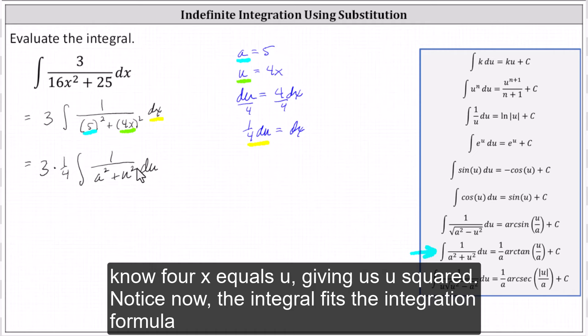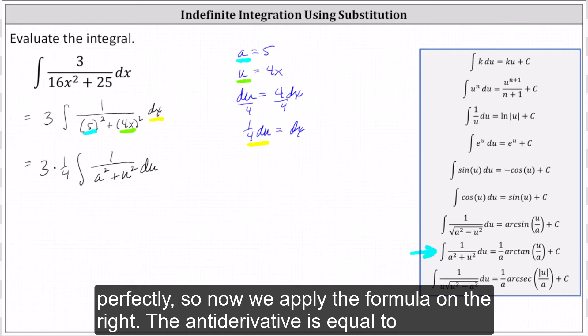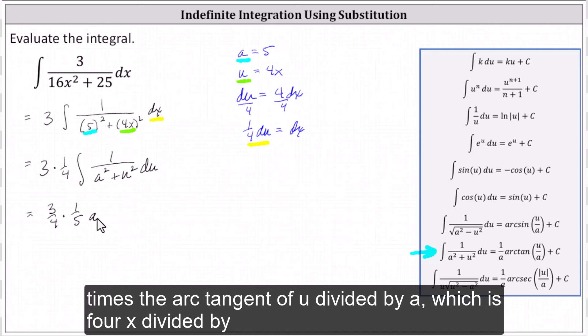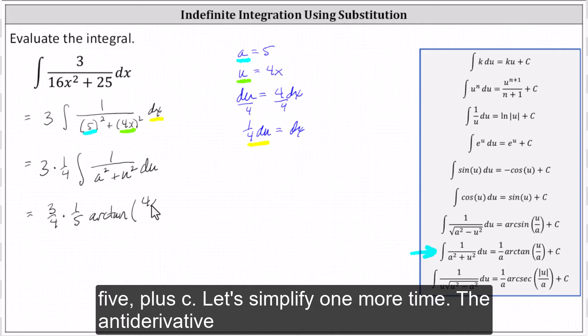Notice now the integral fits the integration formula perfectly, so now we apply the formula on the right. The antiderivative is equal to three-fourths times one divided by a, which in our case is one divided by five, times the arctangent of u divided by a, which is four x divided by five, plus c.